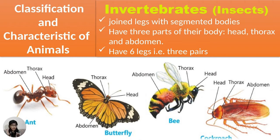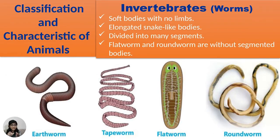Worms are invertebrates with soft bodies, no limbs, and elongated nail-like bodies divided into many segments. Flat and round worms are without segmented bodies. Vertebrate animals have backbones, blood that circulates their body, protective skin covering, most have legs, wings, or fins, and a nervous system with a brain.